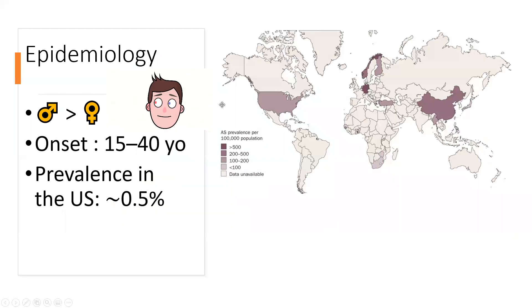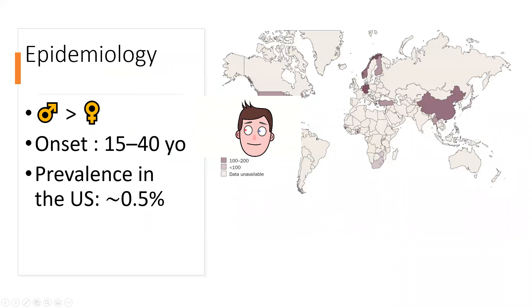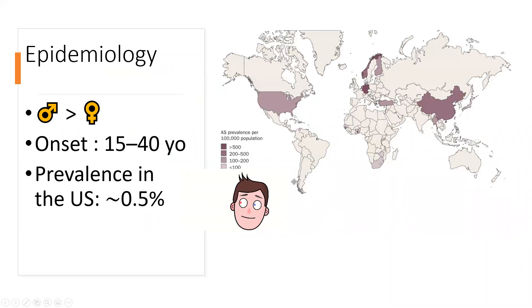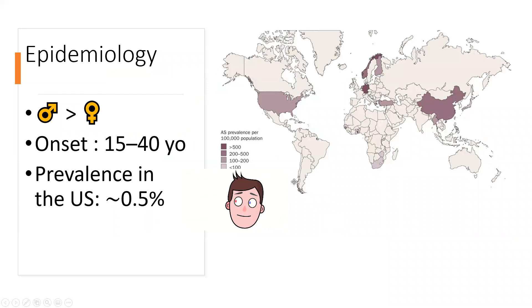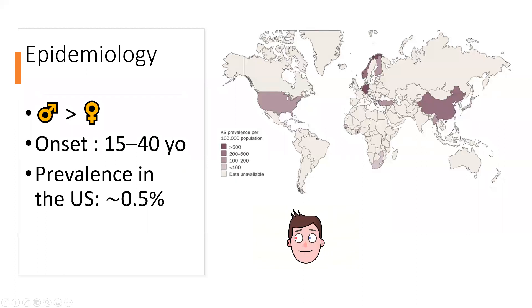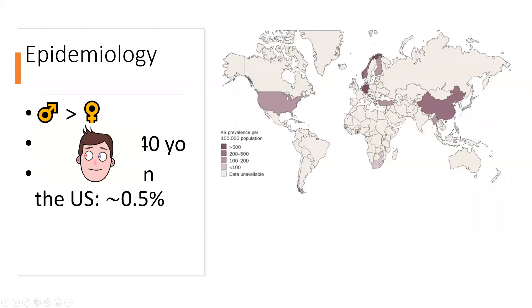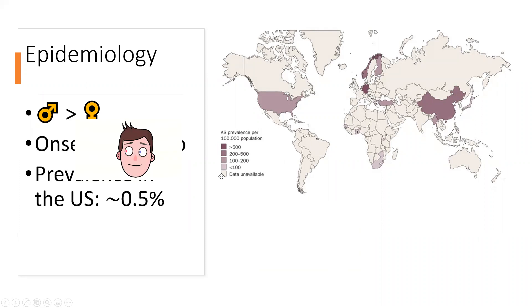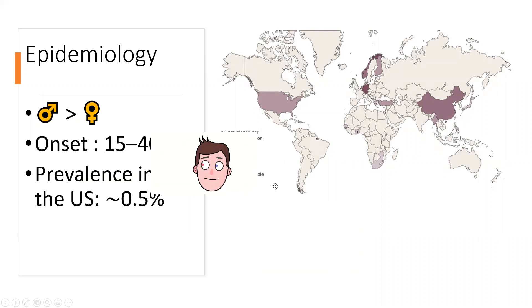Let's look at the epidemiology. Men are more commonly affected than women, usually at a 3:1 ratio. Onset is between 15 to 40 years old and the prevalence in the US is about 0.5%. It starts out young and is more common in men, though women and older people can still get it — it's just more rare in those populations.